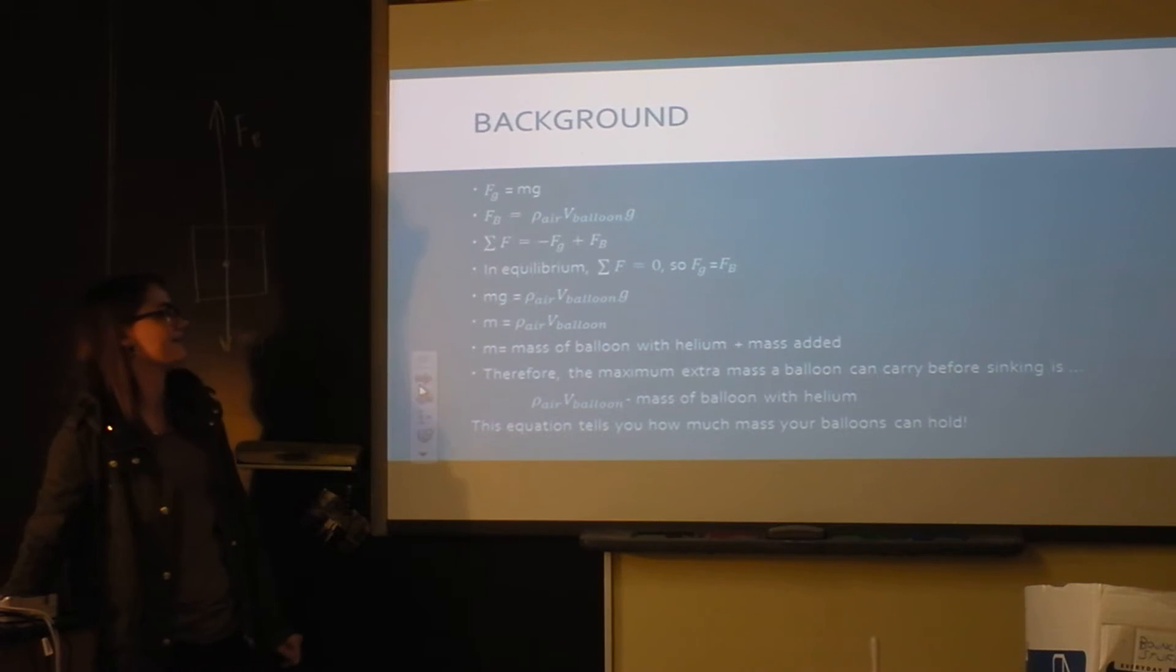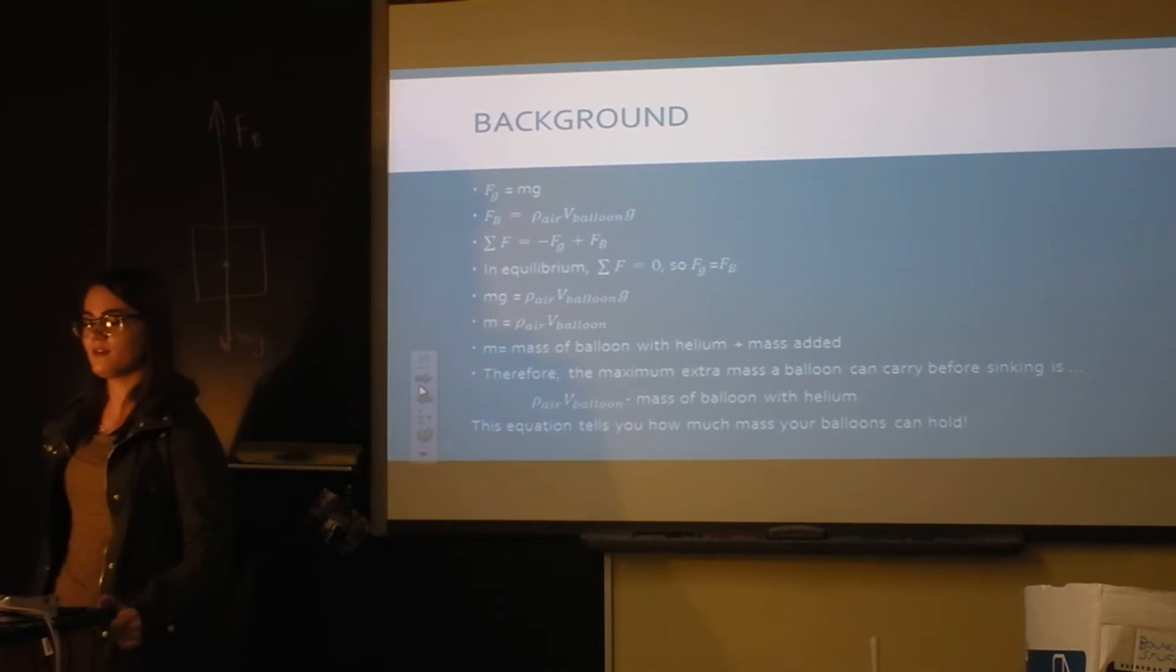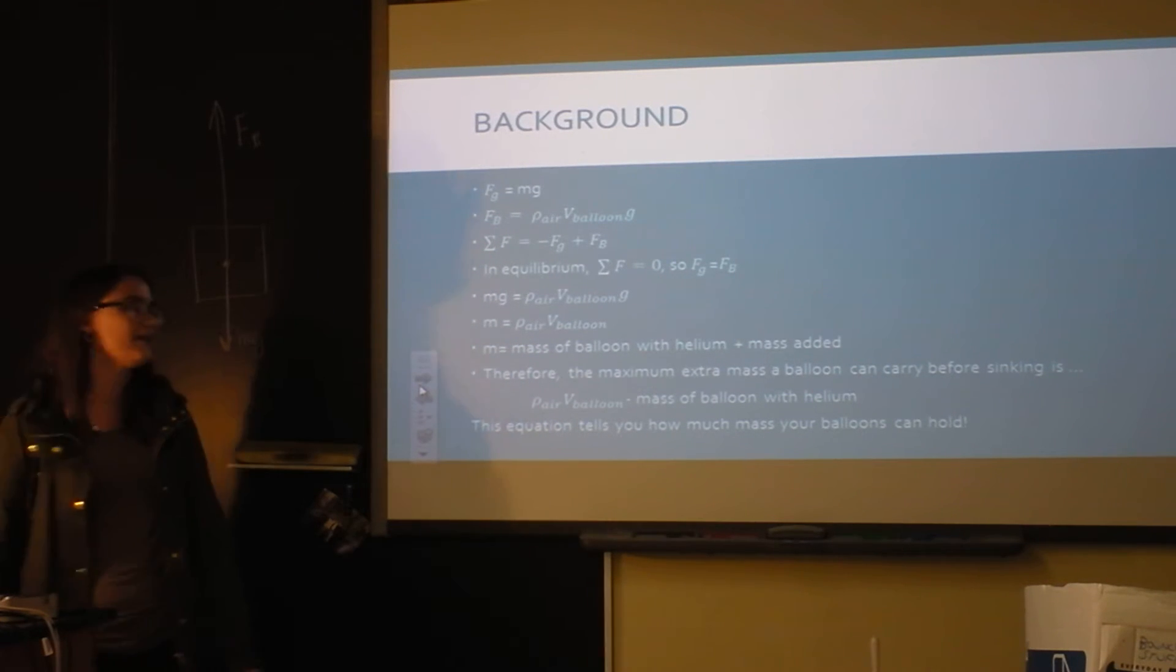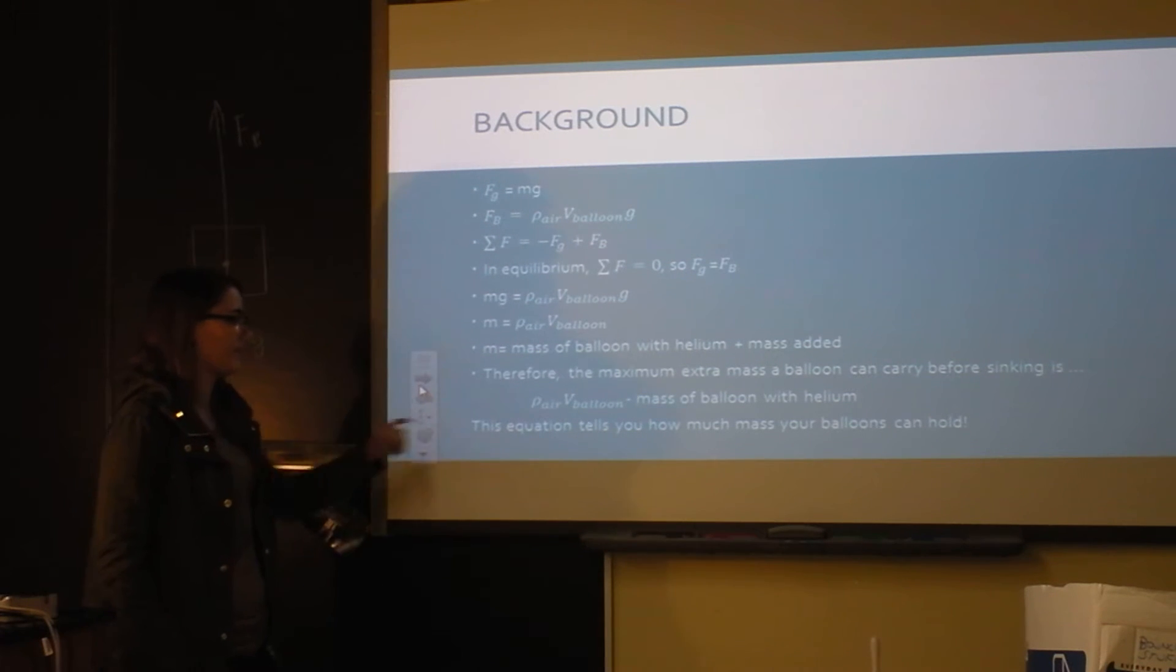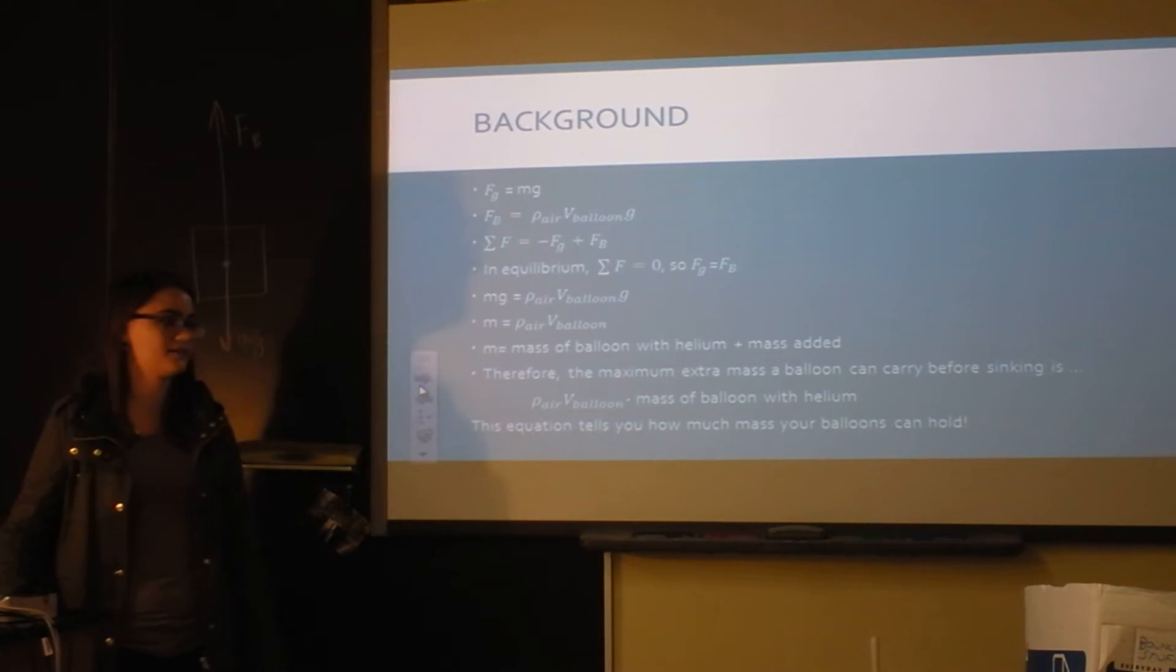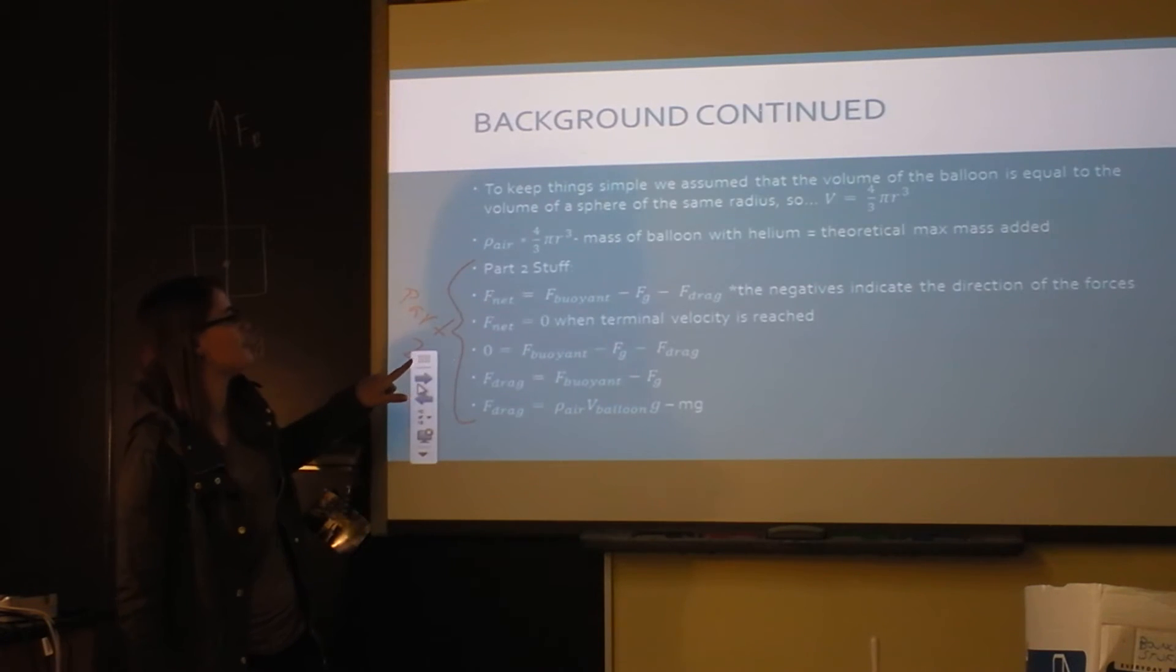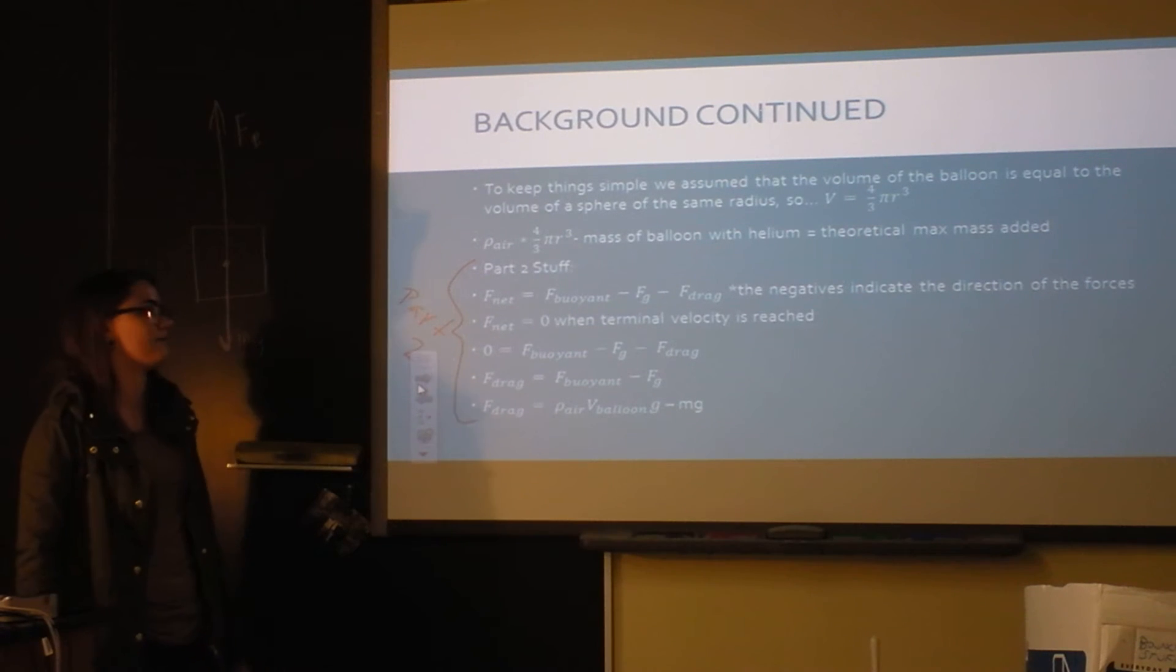Here's my background. I derived an equation that tells you how much mass you can add to the balloon before it stops floating. That's basically just the buoyant force minus mg. But I included—you have to include the mass of the balloon's helium and the actual latex balloon. This is the buoyant force minus mg, but I could take out the g because you can factor that. You have to also subtract the mass of the balloon and the helium in order to tell what actual mass you can add to make it not move upwards.